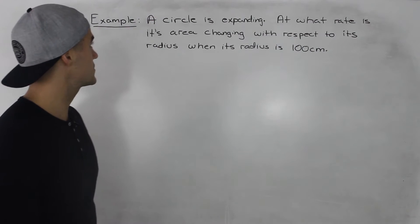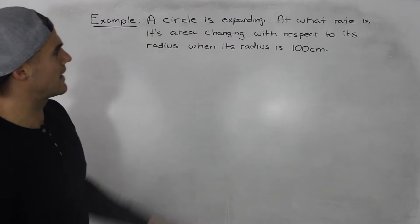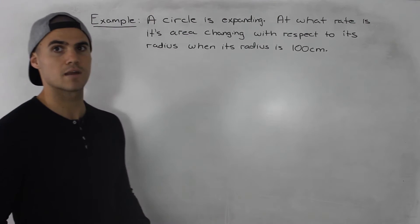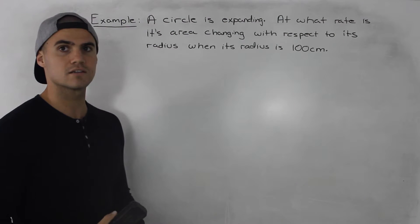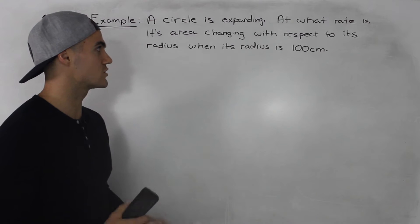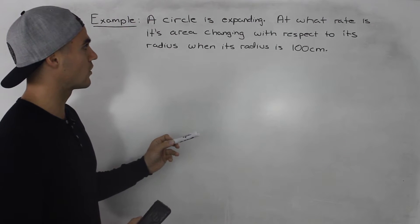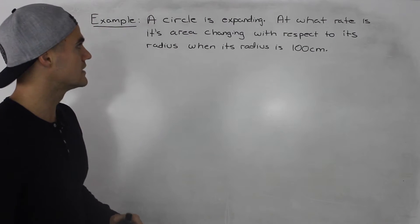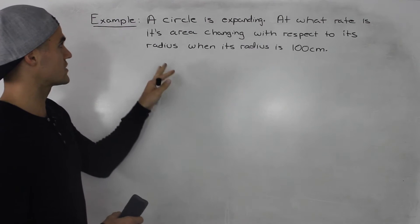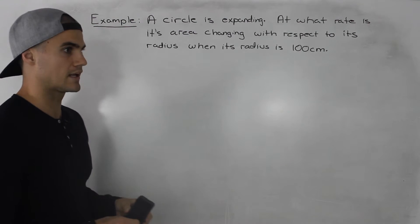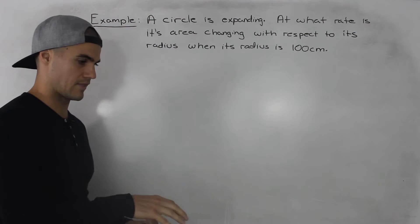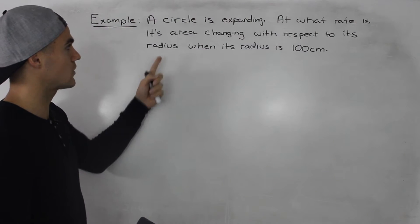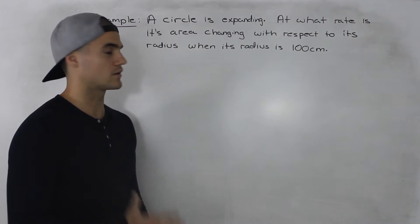Moving on to another rate of change example. We have a circle and it's expanding. What rate is its area changing with respect to its radius when its radius is 100 centimeters? You'll run into these types of questions a lot on a test or in your textbook. A common way this is worded is that a stone is dropped in water and circular waves are created and expanding — that would be a circle expanding like in this question. But here I kept the wording pretty simple.